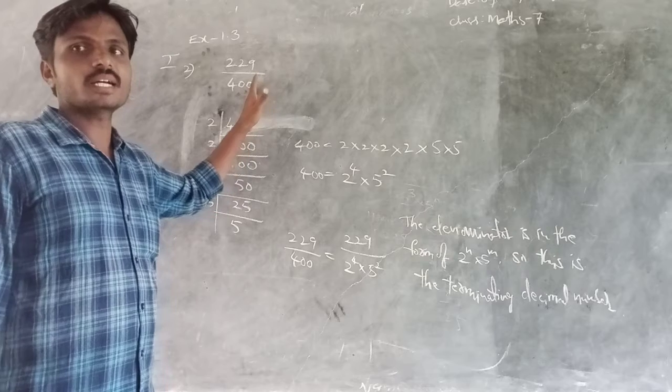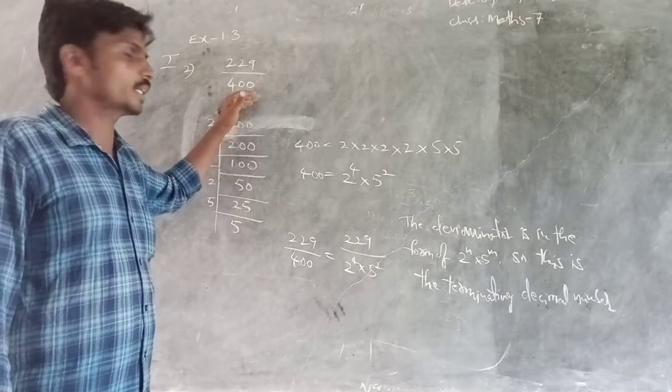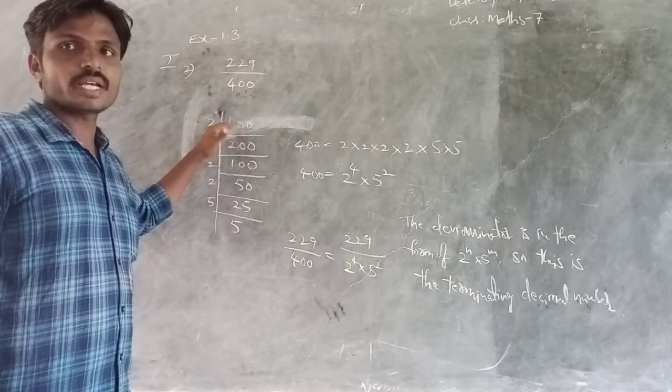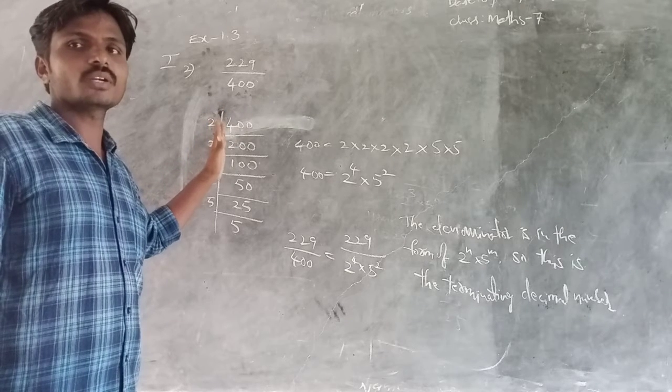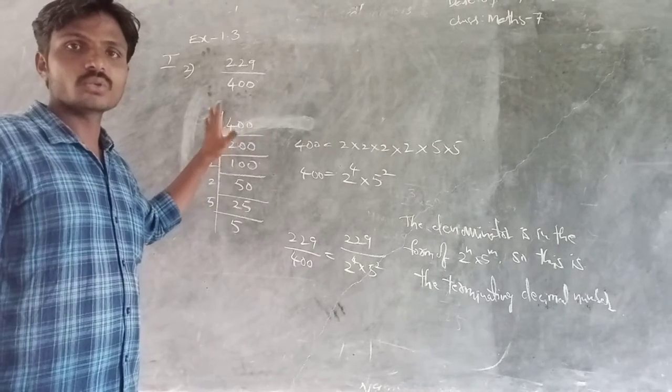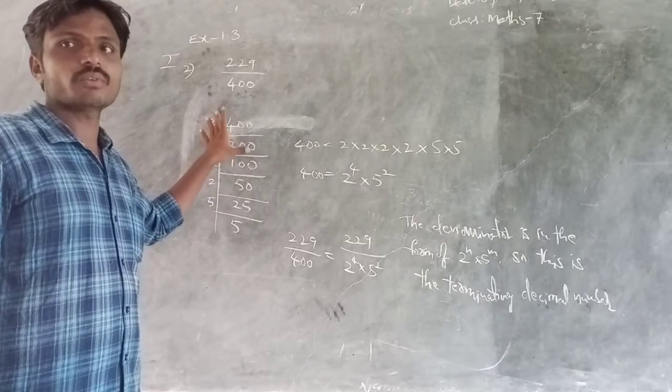That is why I am taking the denominator 400 and factorize by using only 2 and 5 table. I am factorizing the 400 by using the 2 or 5 table only.